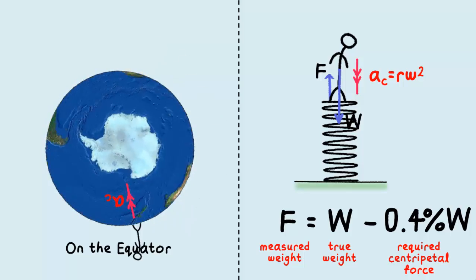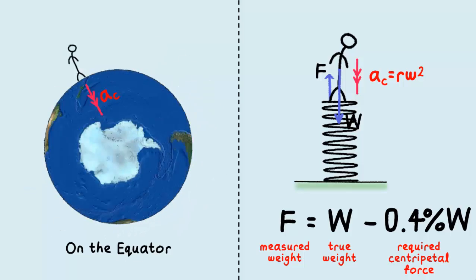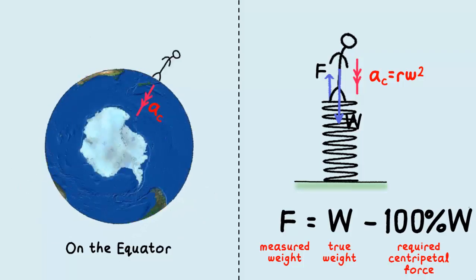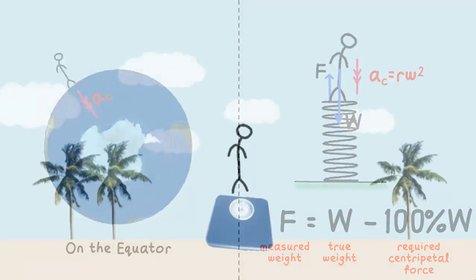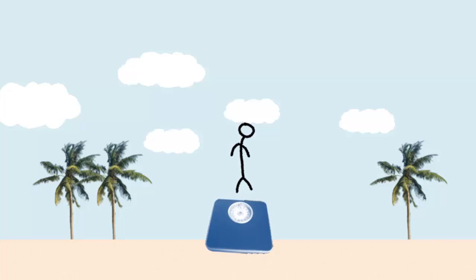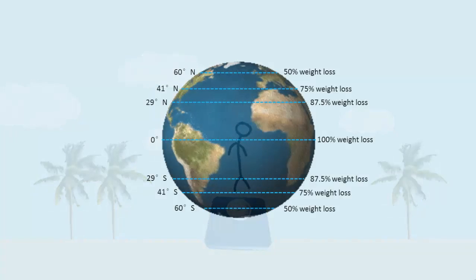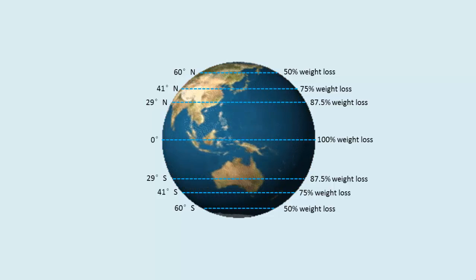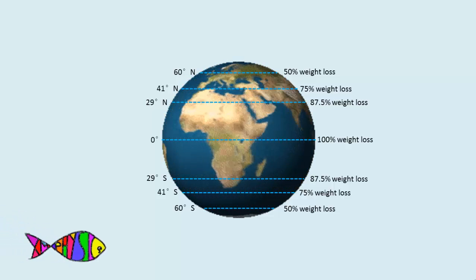If the Earth were to rotate about 16 times faster, the required centripetal force would be approximately 100% of the gravitational pull. Everything on the equator will be apparently weightless. And you can apparently lose any fraction of your weight by moving yourself to the correct latitude.